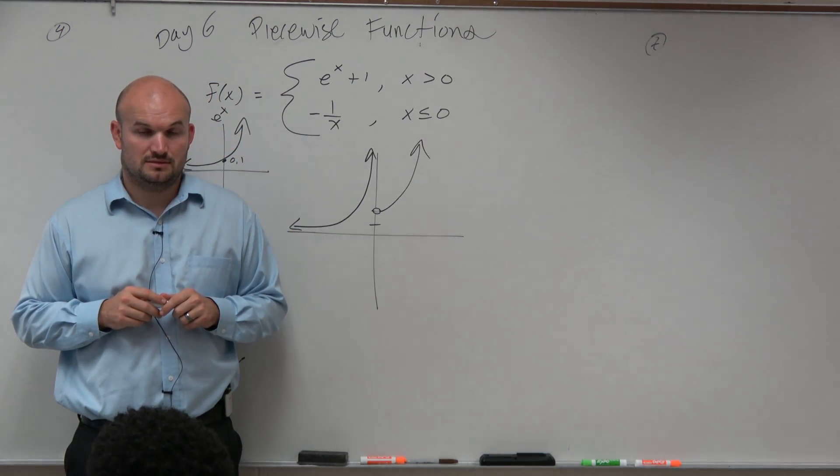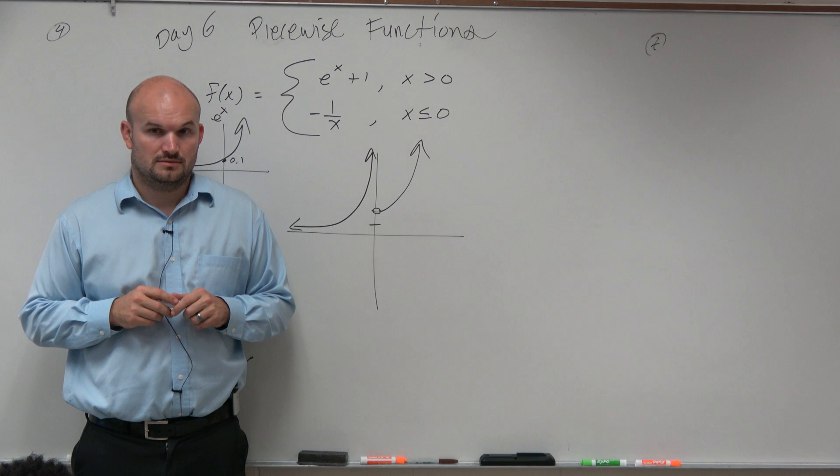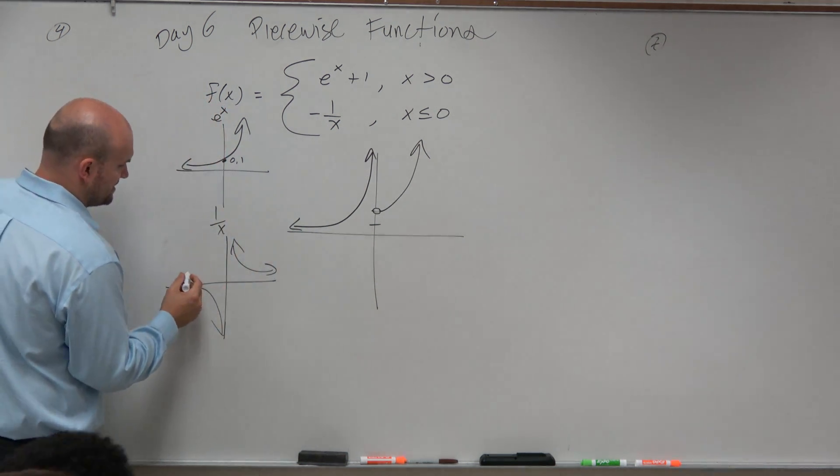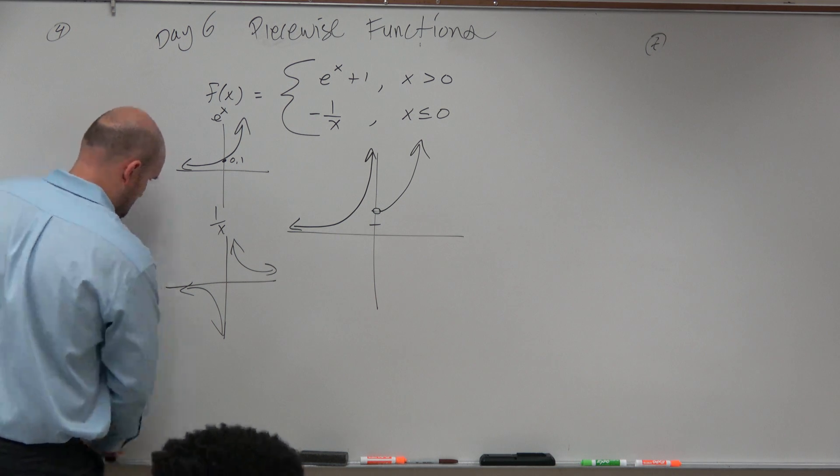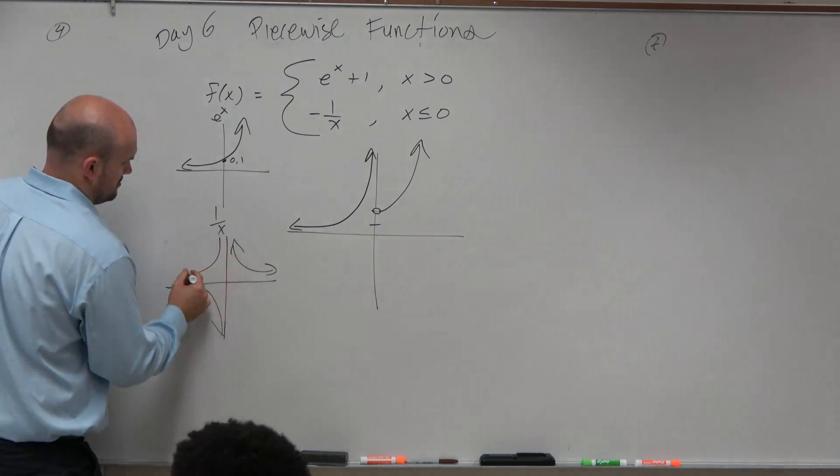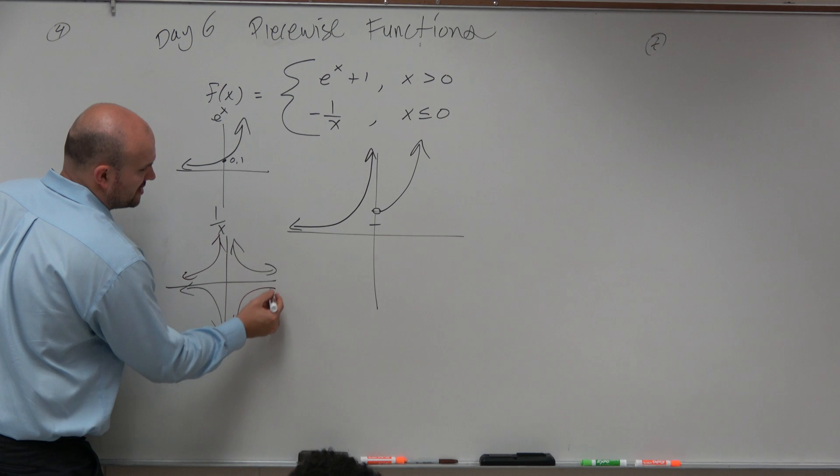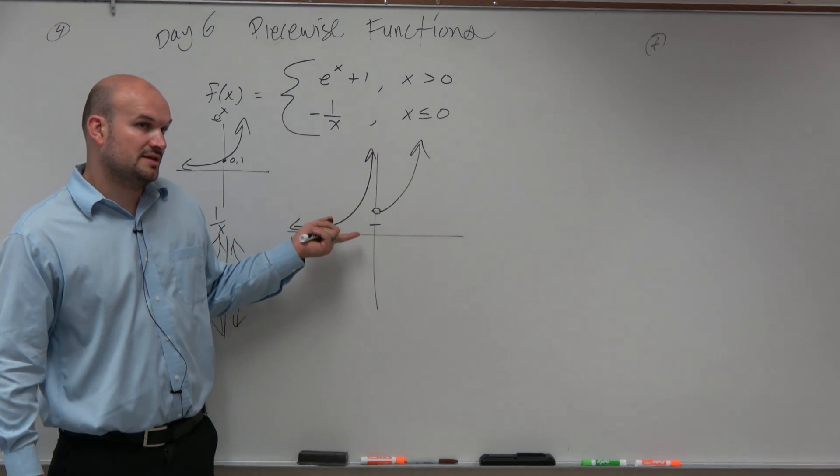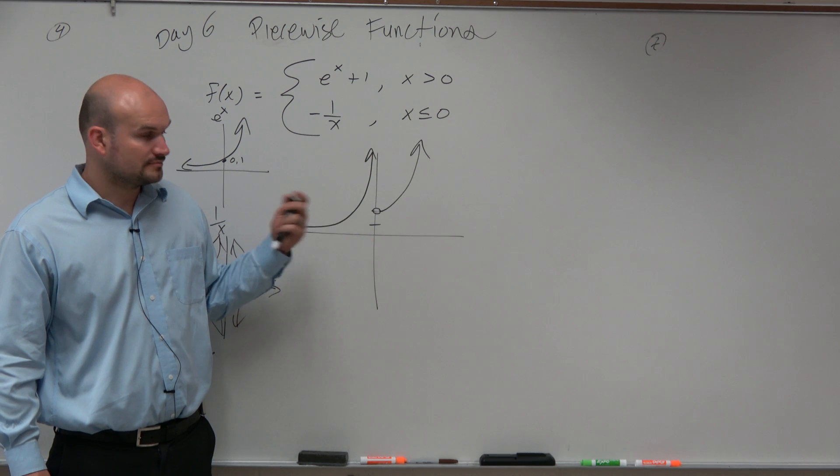Now, yes? Isn't it negative 1 over x and then would the graph be different or would it be? Well, if it's negative, the graph is now going to look like this. Oh, you should put the parent function up there? Yeah, I just put the parent function up there. So now you guys can see that's what this graph looks like.